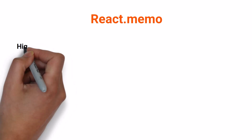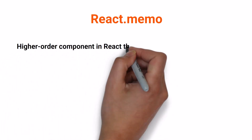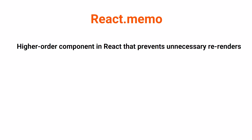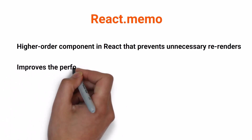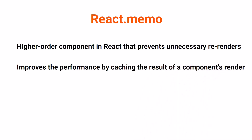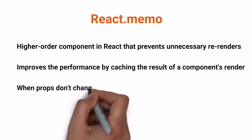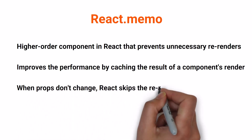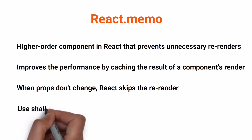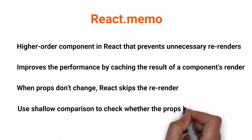React.memo is a higher order component in React that allows us to optimize functional components by preventing unnecessary re-renders. React.memo helps improve the performance of our app by memorizing, or in other words, caching the result of a component's render. When the component's props don't change, React skips the re-render and returns the memoized output. By default, React.memo only re-renders a component if its props have changed. It performs a shallow comparison to check whether the props have been updated.